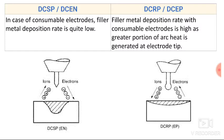In case of a consumable electrode, the filler metal deposition rate is quite low in straight polarity. Since maximum heat is generated at the work piece and less heat is generated at the electrode, the rate of melting the electrode is less, so the filler metal deposition rate is low.